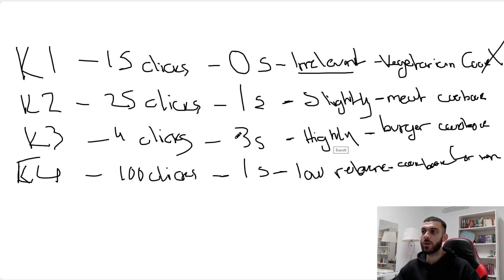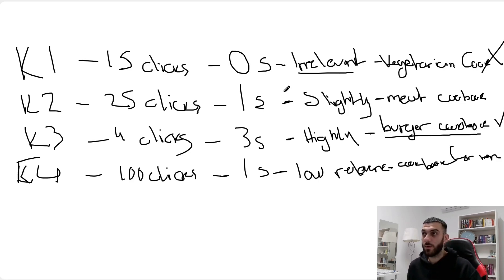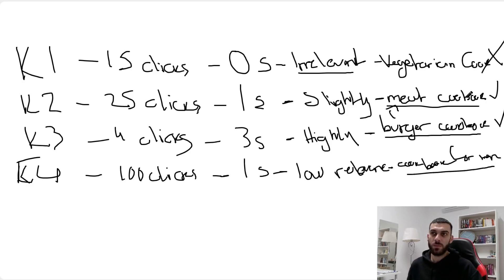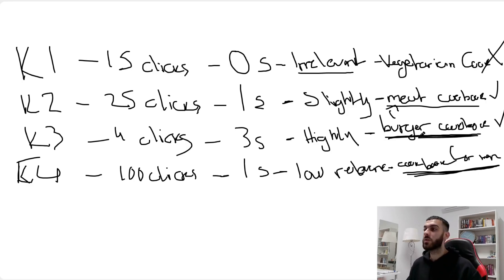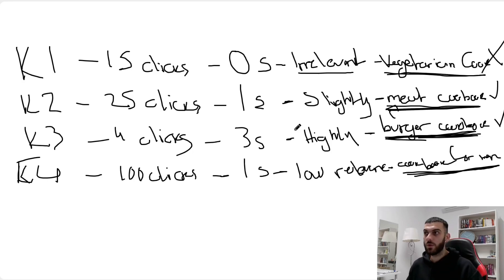'Burger cookbook' was highly relevant — four clicks and three sales. So it's safe to assume this book shows you how to make burgers. Combined with the sale from 'meat cookbook,' since burgers are made from meat, we know it's a burger cookbook that shows you how to cook meat burgers. The keyword 'cookbook for men' got 100 clicks and one sale — very low relevance. It's probably a cookbook for men, but it's extremely broad. Amazon doesn't know what kind of cookbook it is, but with the other keywords it knows it's a burger cookbook. So this is a burger cookbook for men.